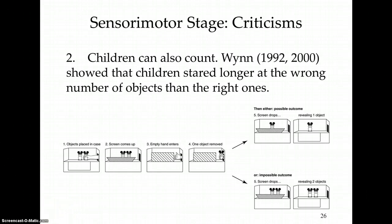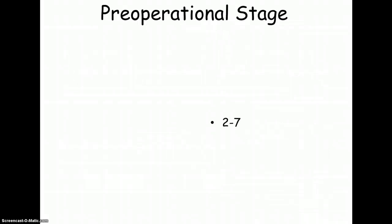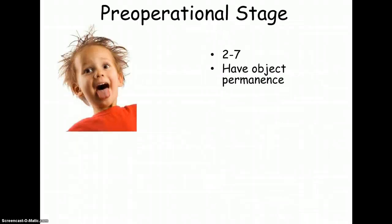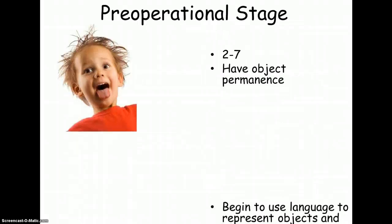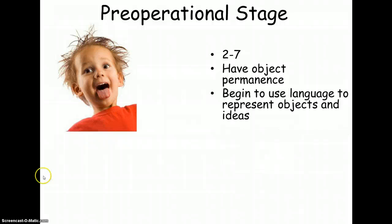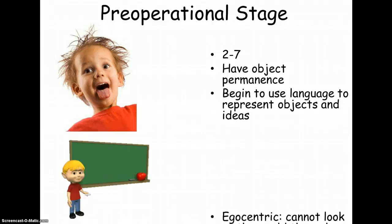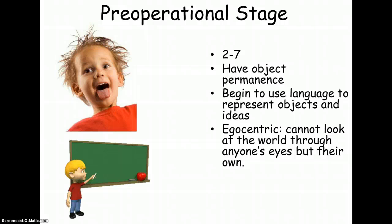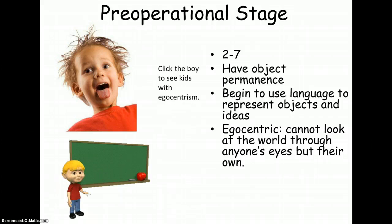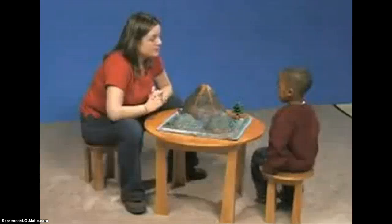Next is the pre-operational stage, ages two to seven — a fairly large range. Children in this stage have object permanence and begin to use language to represent objects and ideas. The big characteristic here is that they're egocentric: they can't look at the world through anyone else's eyes but their own. Here's a good video example of a child in that stage.